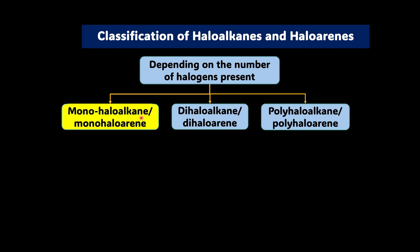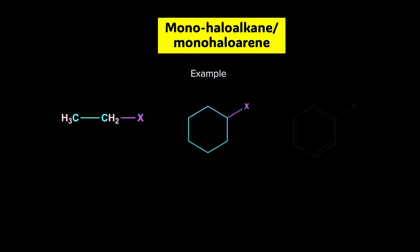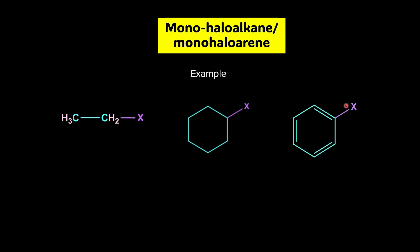Let's begin with mono-haloalkanes or mono-haloarenes and understand them with examples. Here you have an alkyl chain with one halogen attached to it, so it is a mono-haloalkane. Similarly, here you can see a cyclohexane with one halogen attached — this also is a mono-haloalkane, specifically a mono-halocycloalkane. In the third example, you have a benzene ring with the halogen directly attached, so in this case we call it a mono-haloarene.